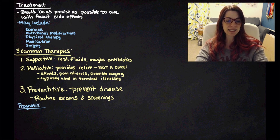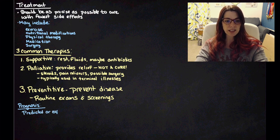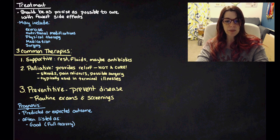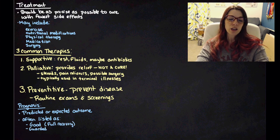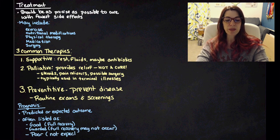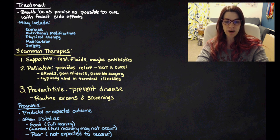And then the last step in the disease process is prognosis. Prognosis is the predicted or expected outcome for the patient. And it's often listed as one of three possible outcomes. Good, which means that the patient should make a full recovery. Guarded, which means that a full recovery might not occur. And then poor, which means that the patient is not expected to recover.